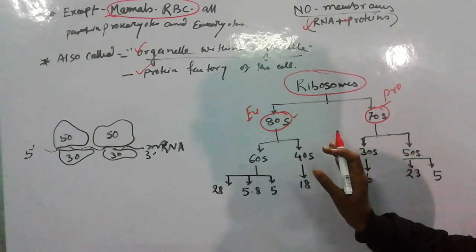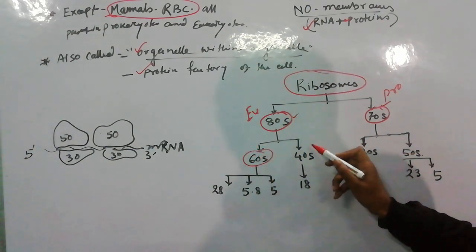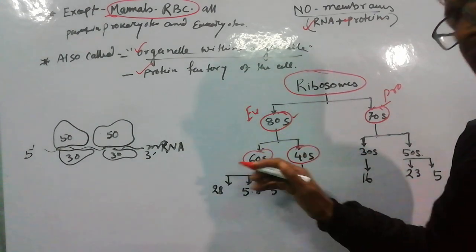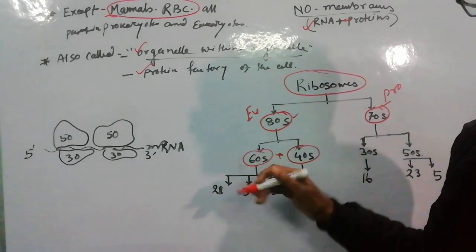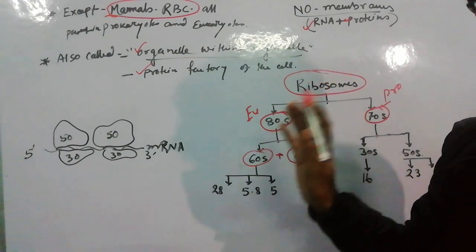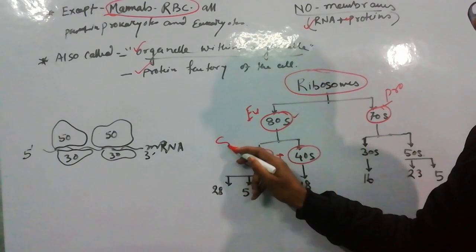And if we divide 80S into subunits, it has 60S subunit and 40S subunit. 60 plus 40 should be 100, but it's 80 - this is another thing. This is sedimentation unit, S means sedimentation unit.